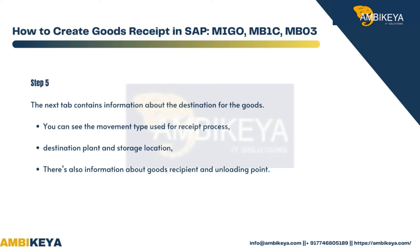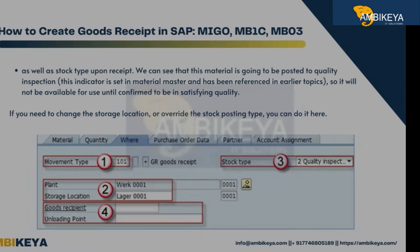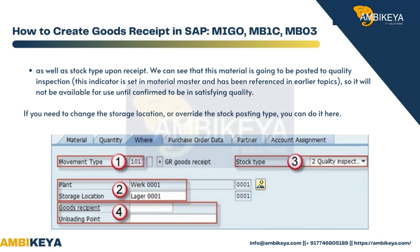In this tab you can see the movement type used for the receipt process, the destination plant, and the storage location. There is also information about the goods recipient, the unloading point, and the stock type upon receipt. In this case, the material is going to be posted to quality inspection, so it will not be available for use until it is confirmed to be of satisfactory quality.